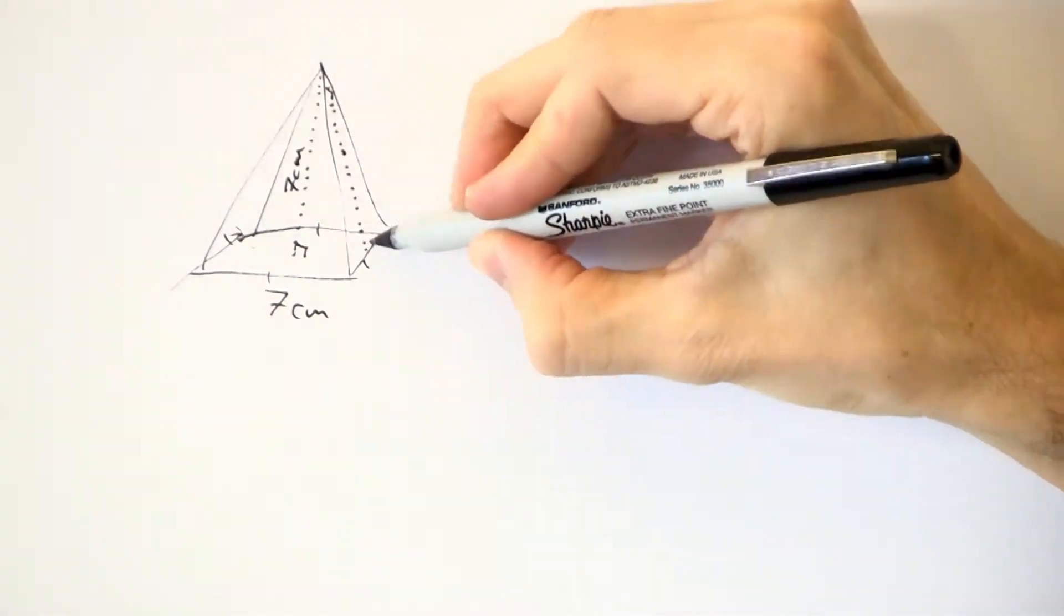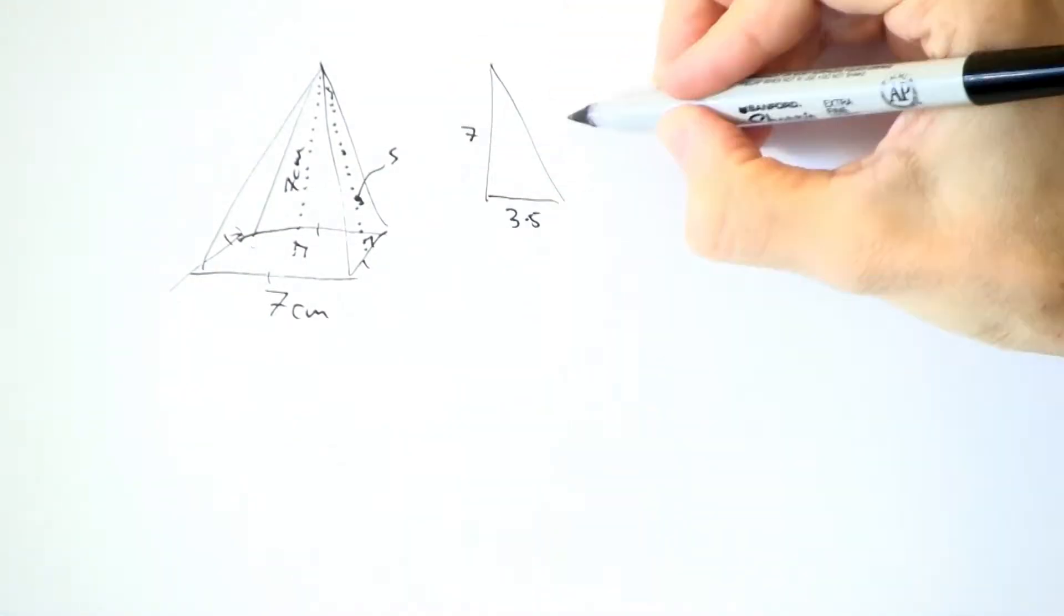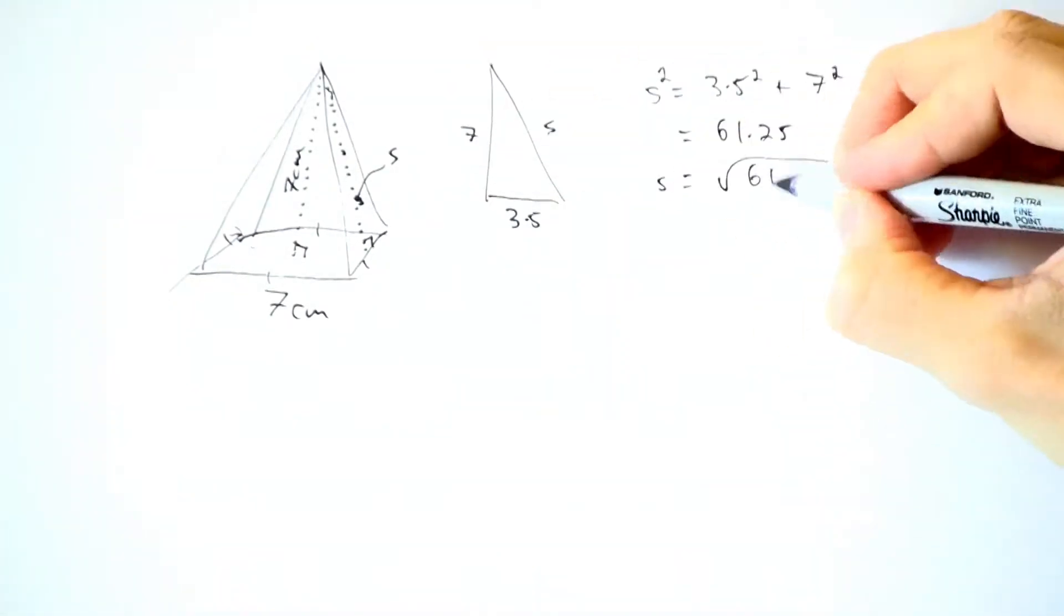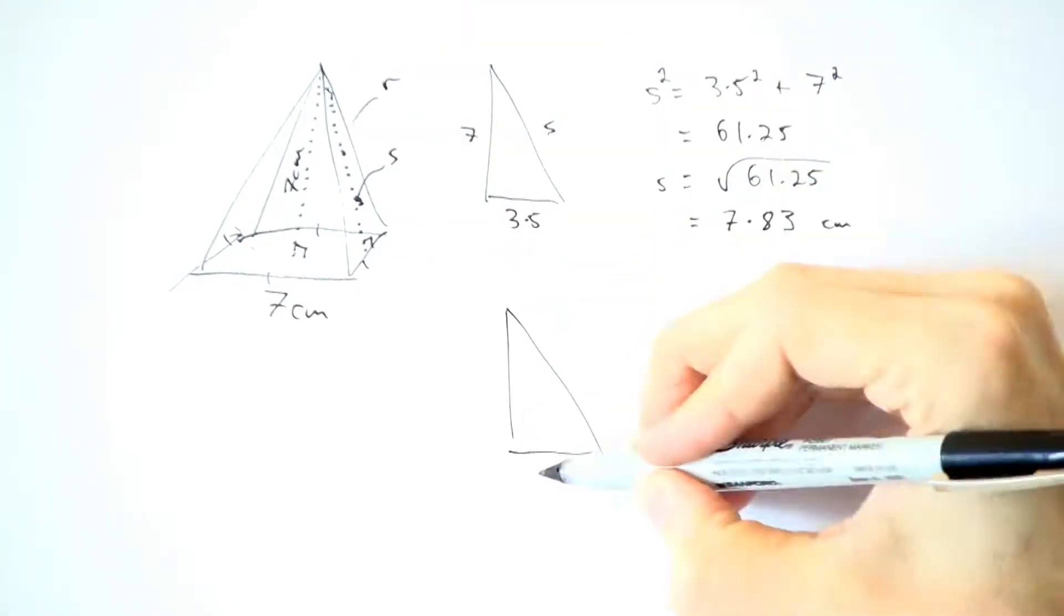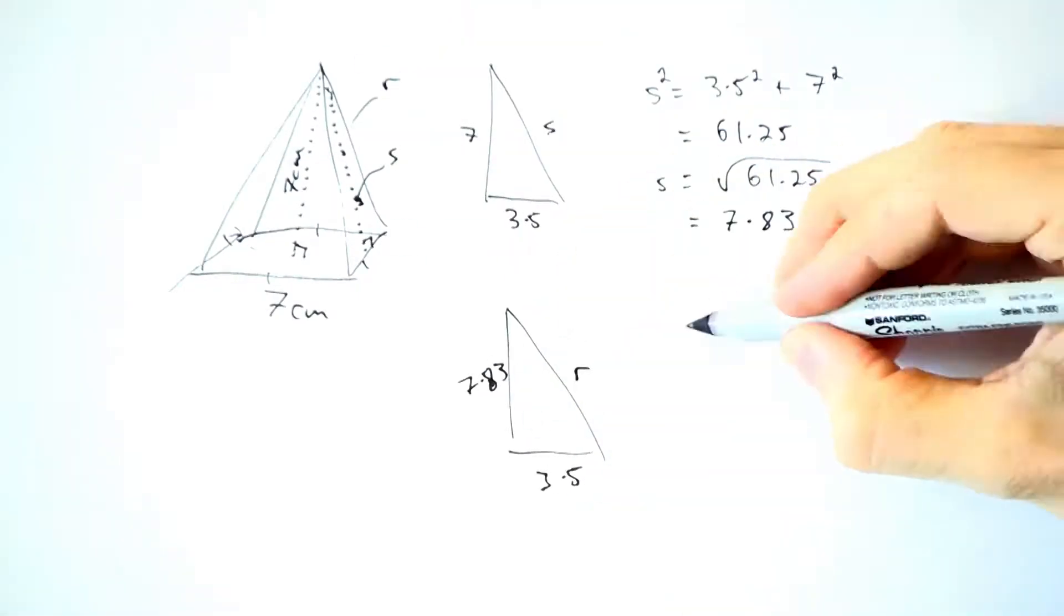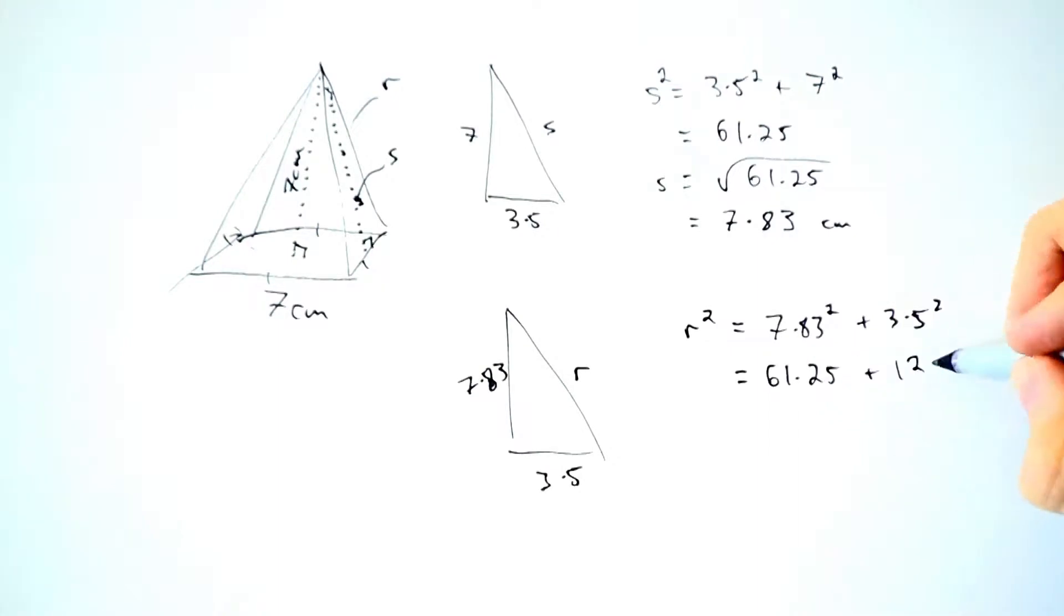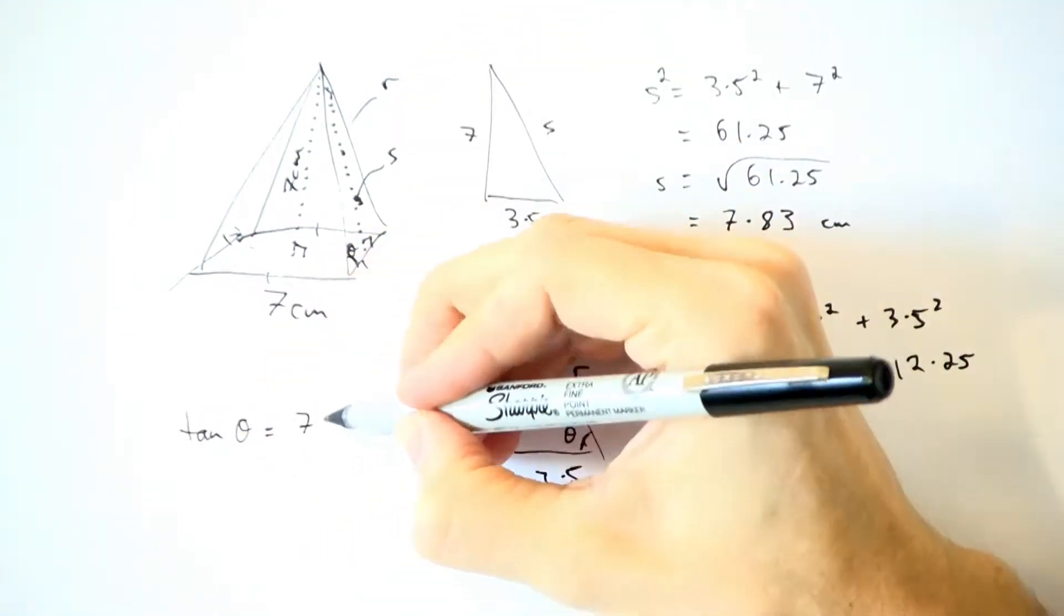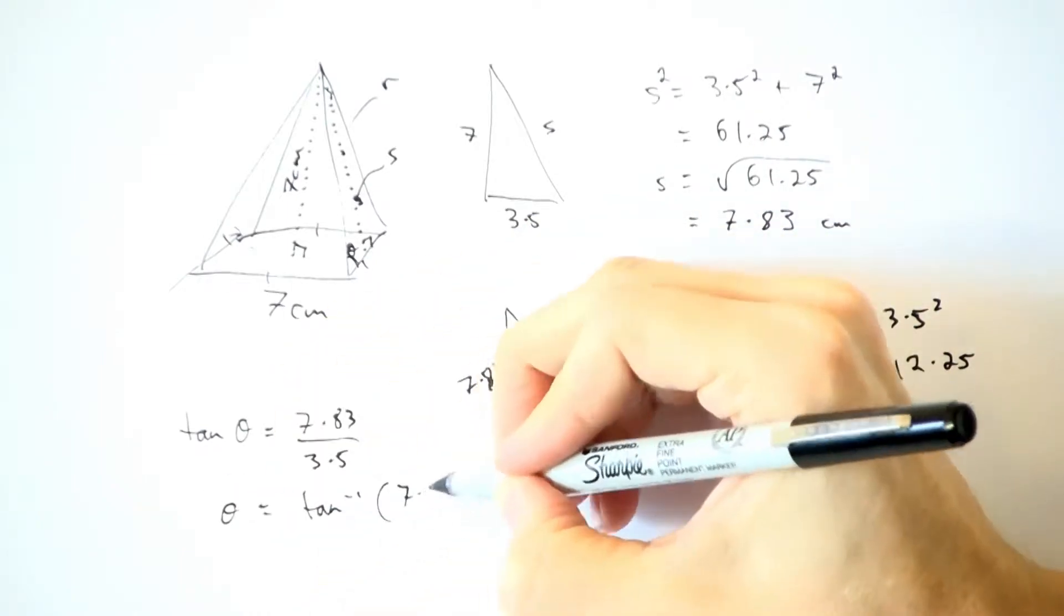The first thing I'm going to have to do is work out the slant height of the pyramid, and then the length of the slanted edge of the pyramid, and finally, the size of this angle at the base of the pyramid.